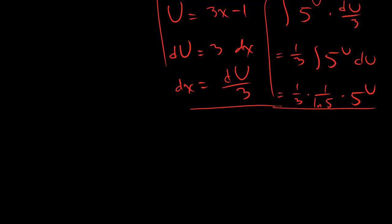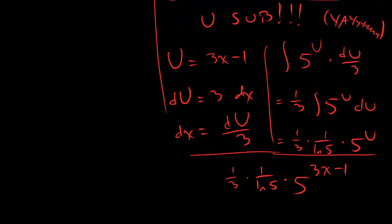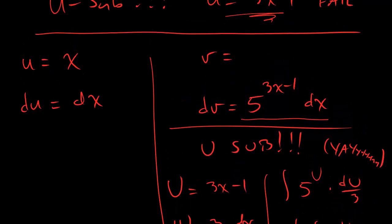you're going to go ahead and plug back in for that capital U, and what you get is 1 third 1 over ln 5 times 5 to the 3x minus 1. That's what we're going to put in just for v. We did all that work just so we could finish our chart, and it looks like 1 third, 1 over ln 5, 5 to the 3x minus 1.